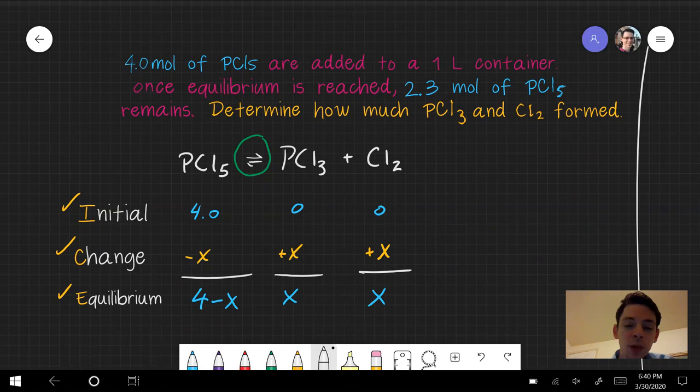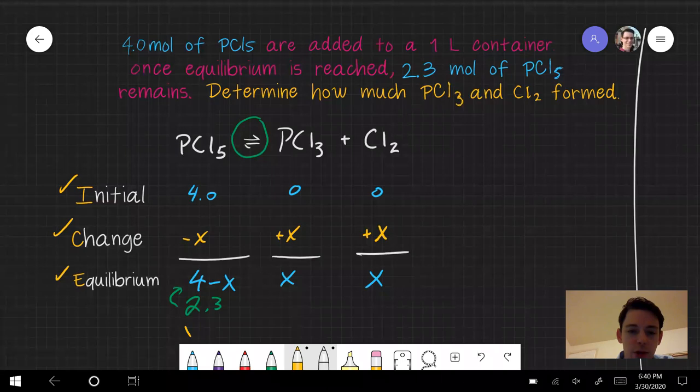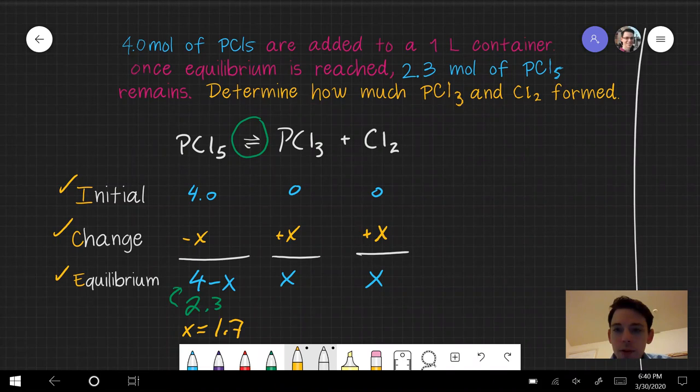Okay, let's look what other information is given in the problem that we haven't used. We see that we have 2.3 moles of PCl5 formed—right. So we know that this is not formed but remaining. We know that this is 4 minus x is 2.3. A little bit of math lets us figure out that x must equal 1.7.